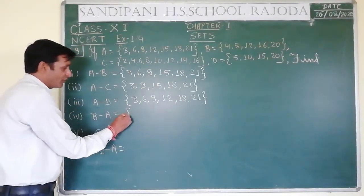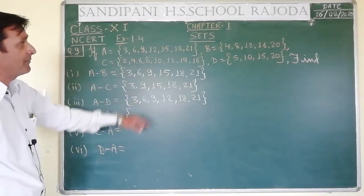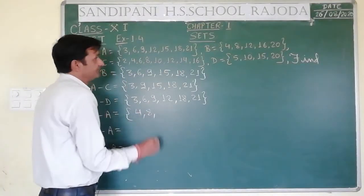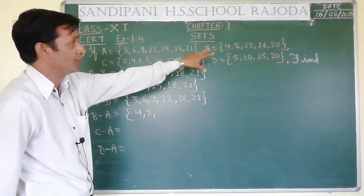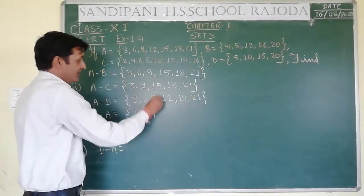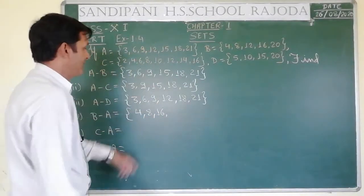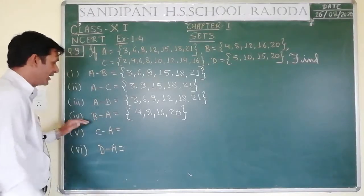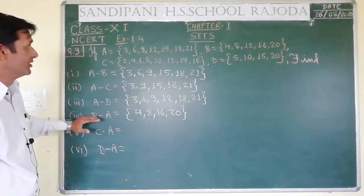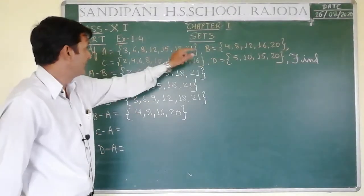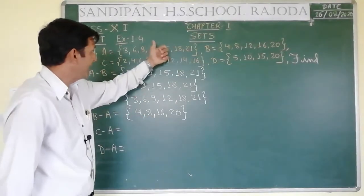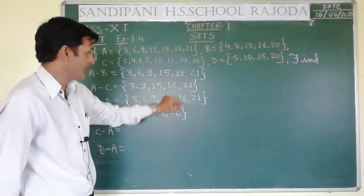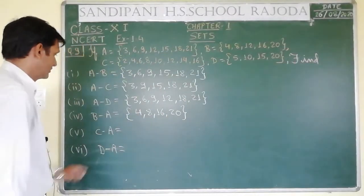Now B minus A: we have to write all elements of B which are not present in A. 4 is not in A — write. 8 is not in A — write. 12 is present in A — so we cannot write 12. 16 is not in A — write. 20 is not in A — write. So B minus A = {4, 8, 16, 20}.